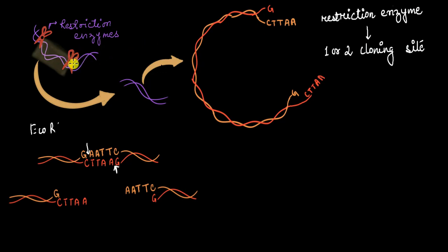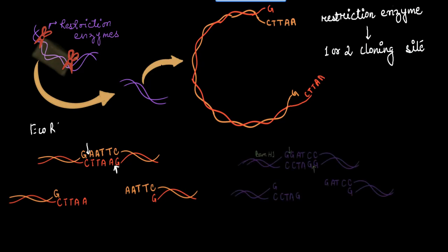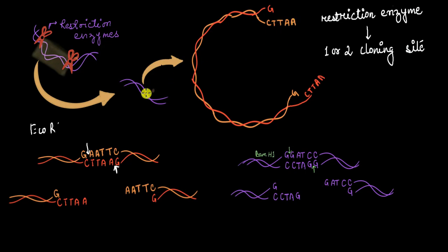So how do we cut the gene of interest so that it has complementary base pairs? Let's say the restriction site near the gene of interest is not EcoR1 but another restriction enzyme, say BamH1. BamH1 recognizes the sequence GGATCC and makes the cut between the two guanines on both strands, producing overhangs with nucleotides C, T, A, and G. Now, if you think about whether these overhangs will fit into the overhangs created by cutting the vector with EcoR1 — since the overhangs do not match and do not have complementary base pairs, there is no condition under which they will ever fit.